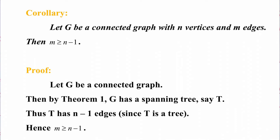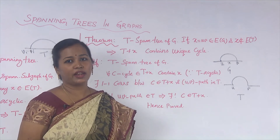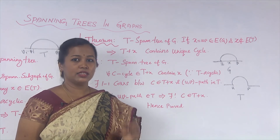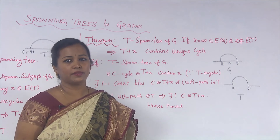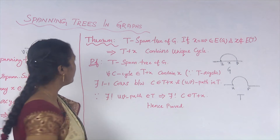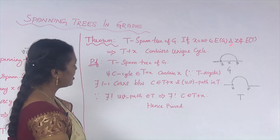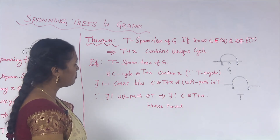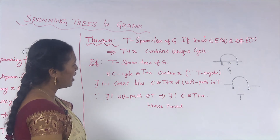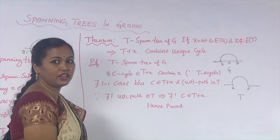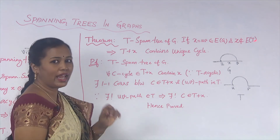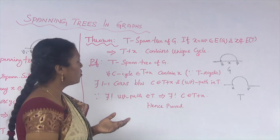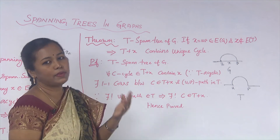Now let us see the next theorem. Let T be a spanning tree of a connected graph G. If x equals uv is an edge of G not in T, then T plus x contains a unique cycle. We shall now see the proof. If T is a spanning tree of G and x equals uv is an edge belonging to the edge set of G but not in the spanning tree T, then T plus x — by adding this edge to the original spanning tree — gives a unique cycle. We will first prove it contains a cycle, then prove uniqueness.